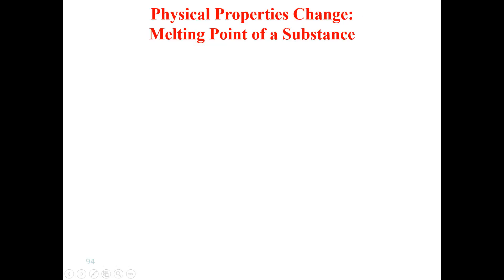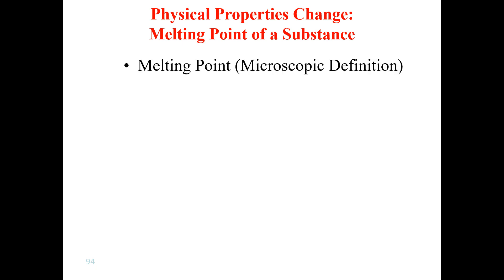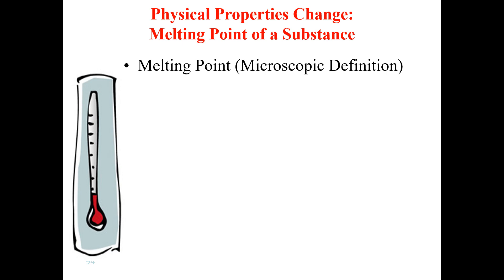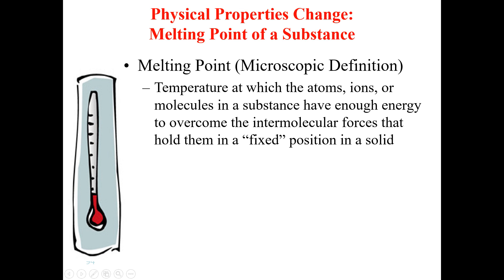The melting point of a substance is one of the physical properties of materials. In today's lecture we look at the melting point of materials, especially when we reduce the size of the materials. First, we should have a macroscopic definition of the melting point. Melting point is basically the temperature at which atoms, ions, or molecules in a substance have enough energy to overcome the intermolecular forces that hold them in fixed positions in a solid.